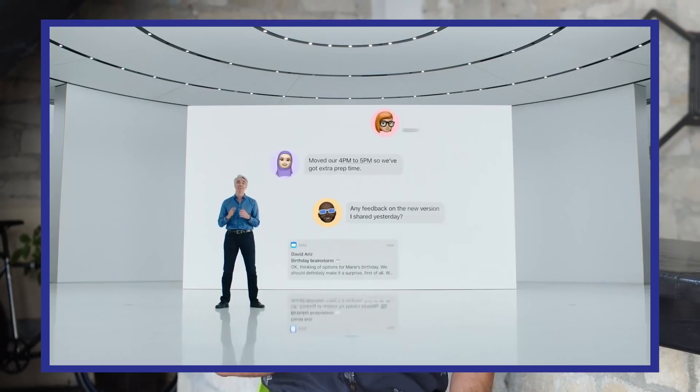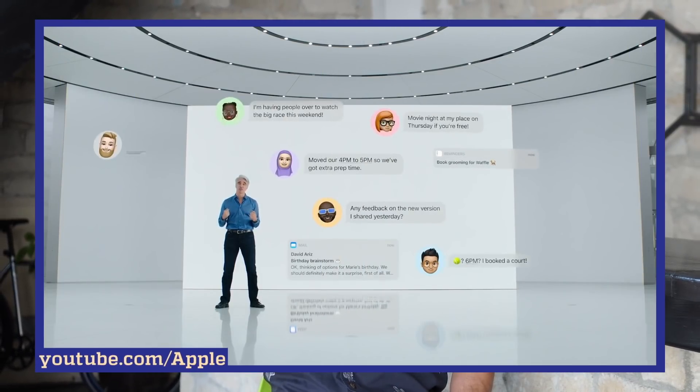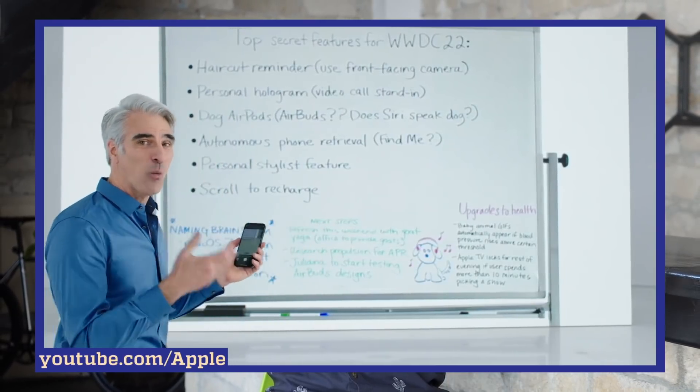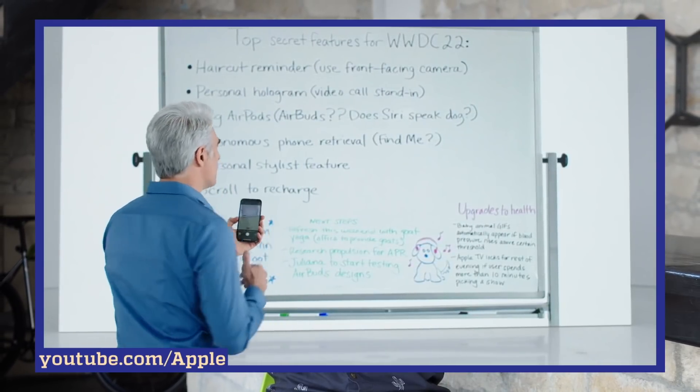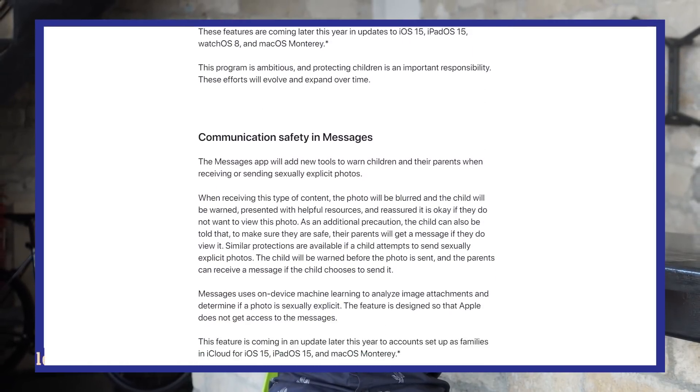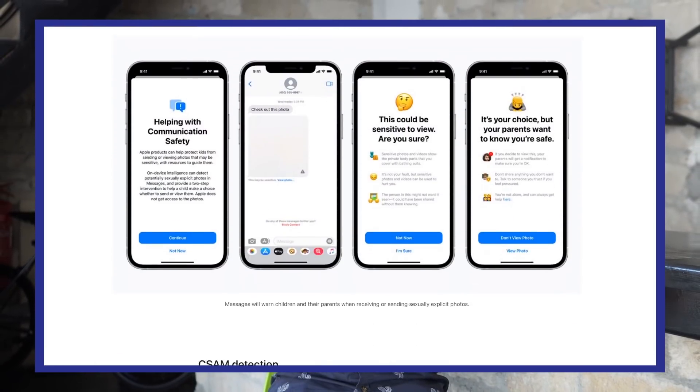G'day everyone, welcome to Sumsum. Today we're going to talk about the main event that occurred in the world of cybersecurity this month. On August 5th, Apple announced the new features of its iOS 15. The most controversial of these relates to Apple's Expanded Protections for Children, an algorithm that will analyze photos on your phone in search of illegal pornographic content. And this has caused some heated debate.